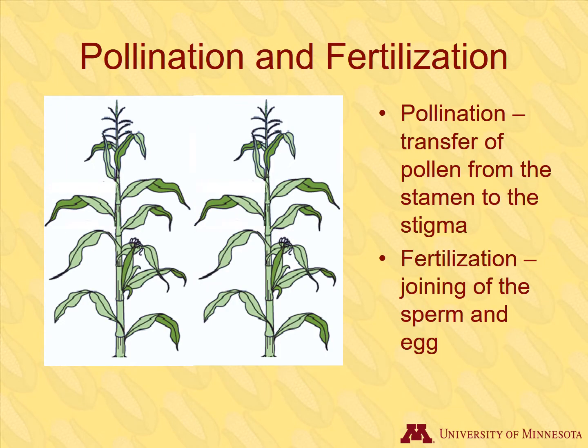Before reproduction can occur, pollination has to happen. Pollination is the transfer of pollen from the stamen, the male part, to the stigma, the female part. Pollination is followed by fertilization, where the sperm from the pollen meets the egg to form the embryo of the corn seed. For more details on these processes, please see our biology of corn lesson.